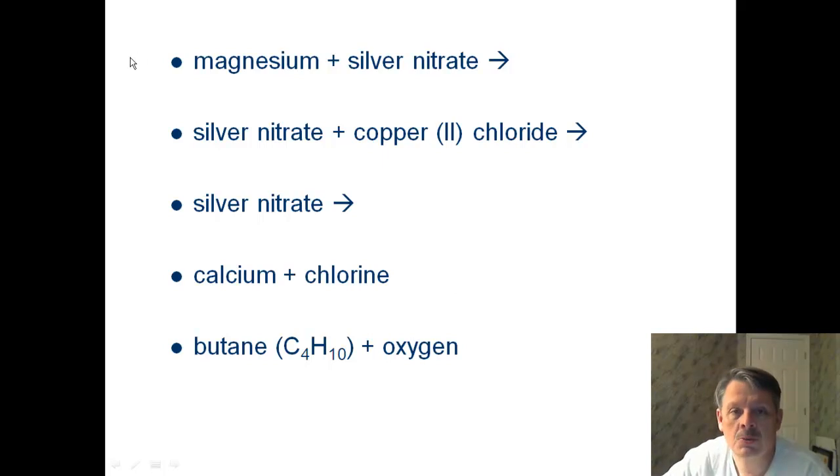Okay, your first one is single replacement. You can tell that because you have an element in a compound. Your second one is double replacement because they're both compounds. Your third one is decomposition because there's only one thing, one reactant. This one is going to be calcium and chlorine, so this is going to be synthesis or direct combination. And your last one is going to be combustion because you have a carbon hydrogen compound plus oxygen.